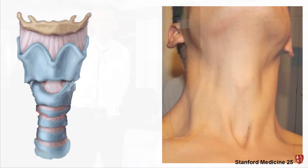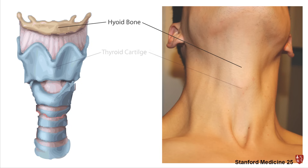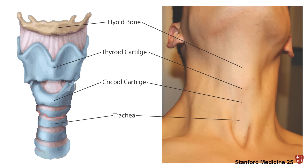There are three cartilages in the neck which one should be familiar with: the hyoid, which is not visible on clinical examination; the thyroid cartilage, which is visible and forms the prominent Adam's apple in a man but may be less prominent in a woman; and the cricoid cartilage, which we're going to be interested in today, which is usually difficult to see clinically but can be palpated.